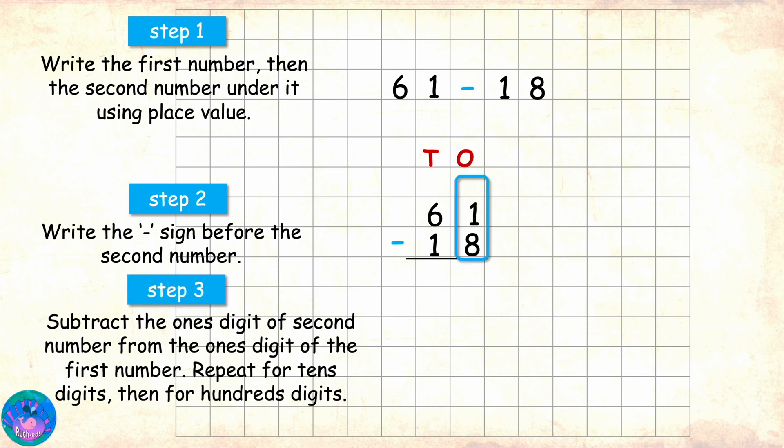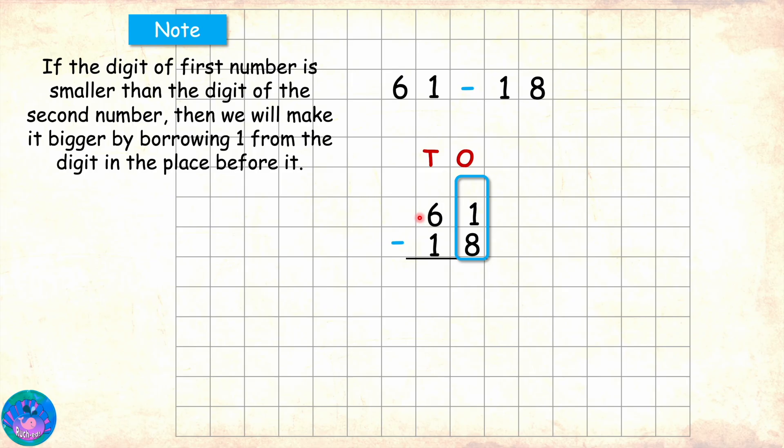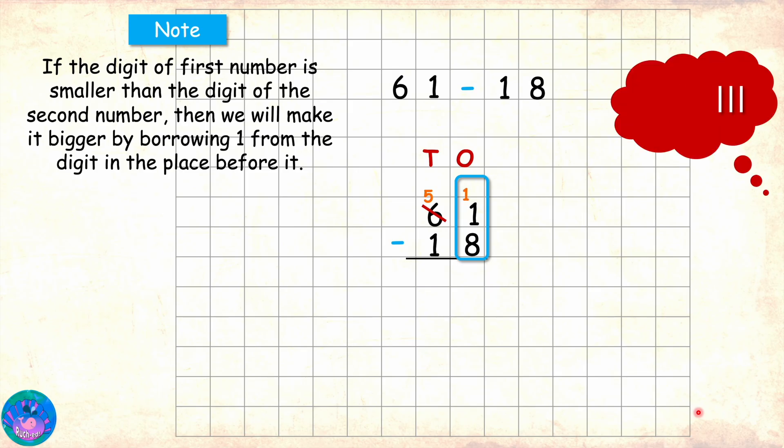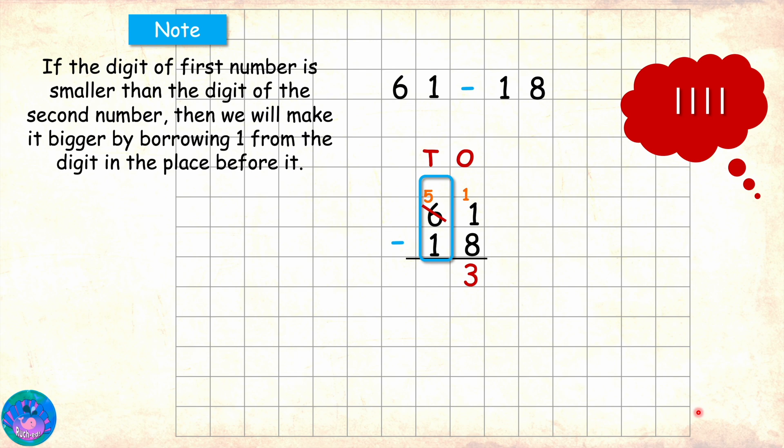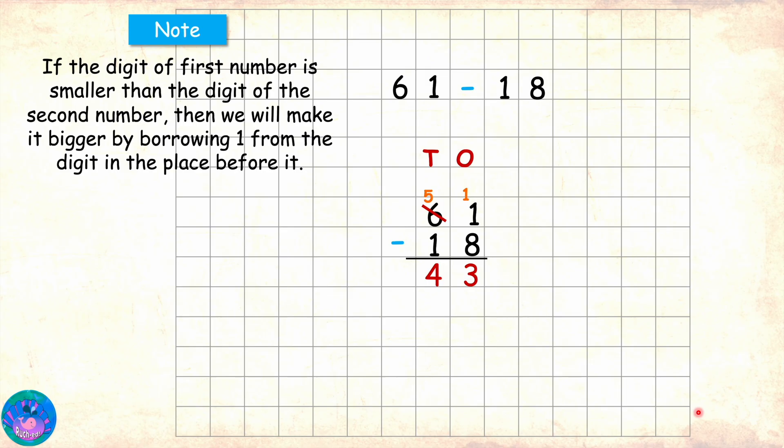Starting from the ones place, we have 1 minus 8. But 1 is smaller than 8, so we will borrow 1 from the 10th place where we have 6. So when 6 gives up 1, we will have 5 left there. And the ones place will actually get 10. And now in ones place, we have 11 minus 8 which is 3. Then we move to the 10th place and here we have 5 minus 1 which is 4. This means that 61 minus 18 is 43.